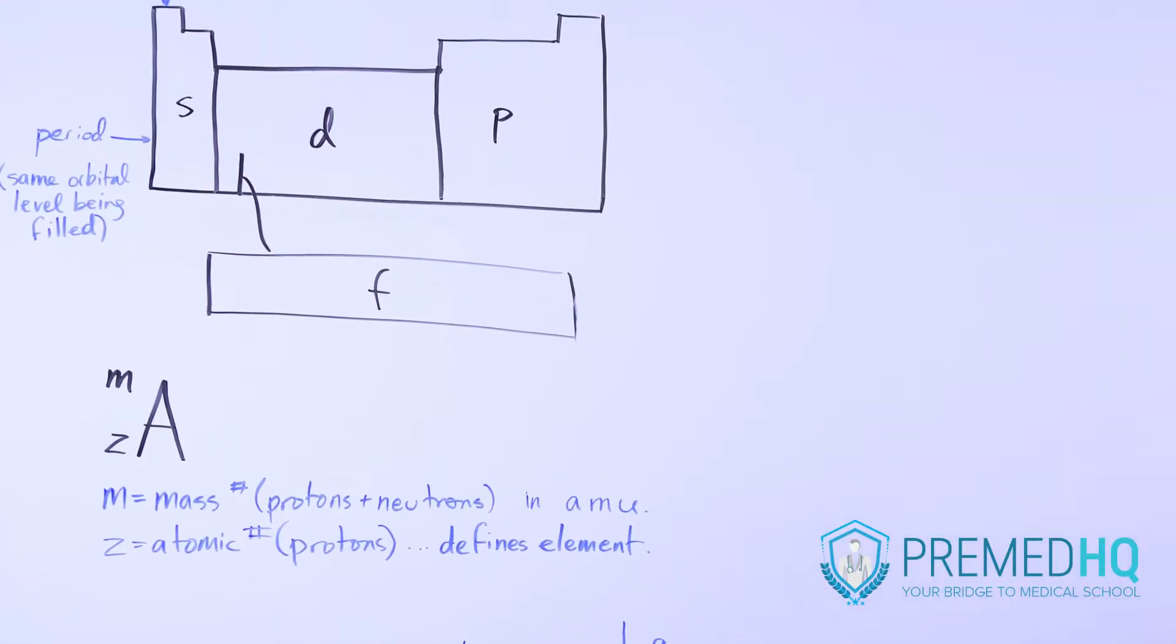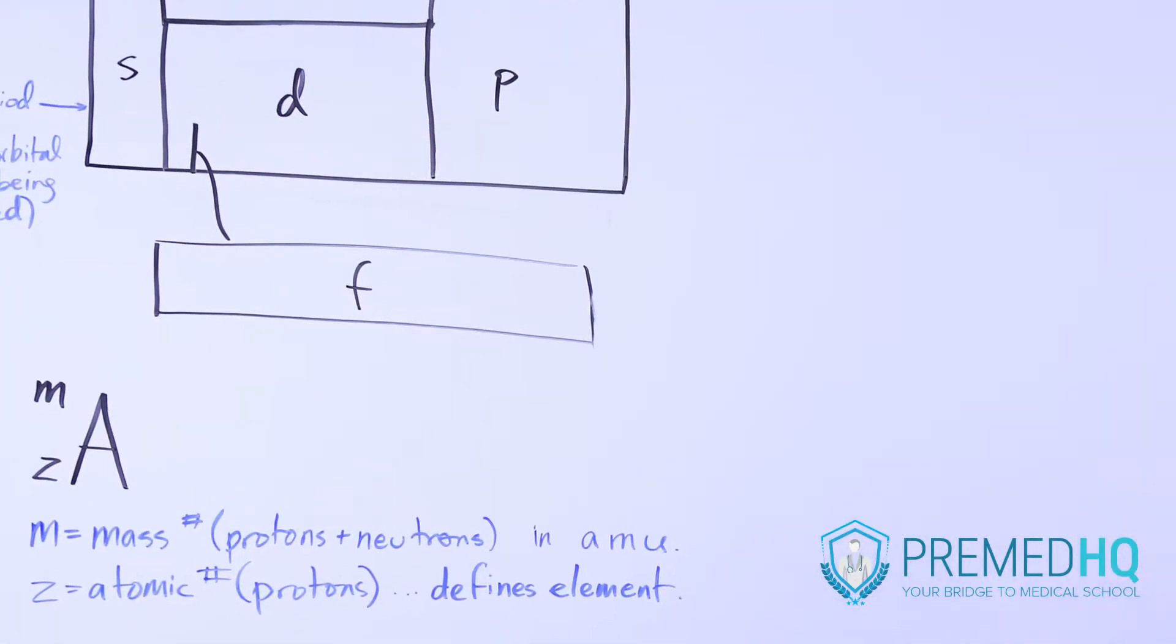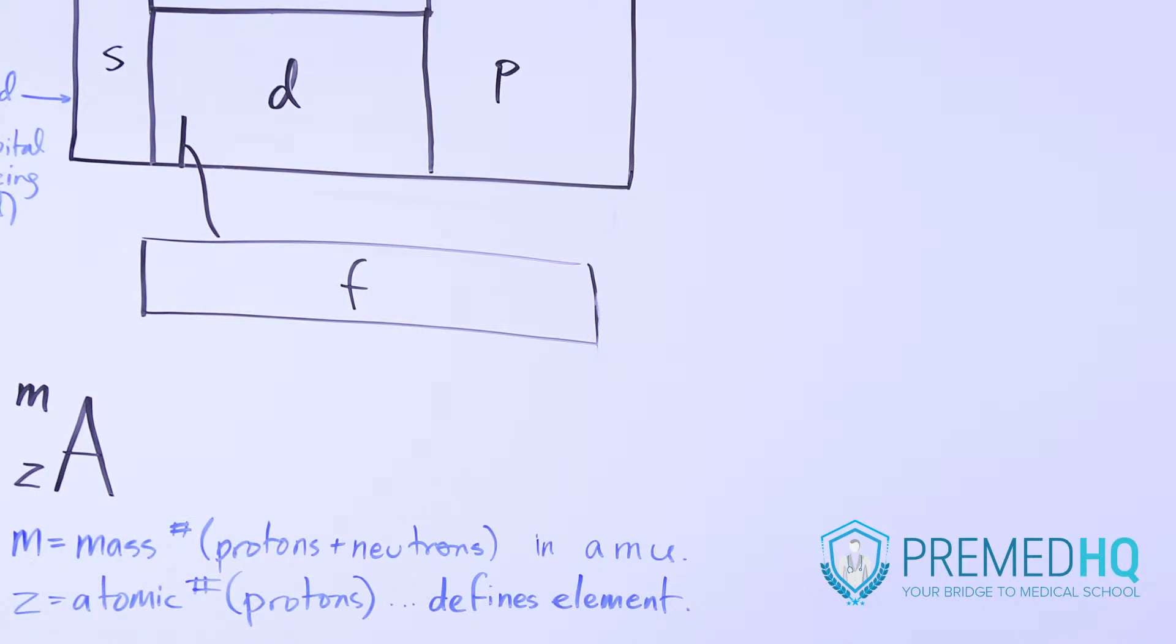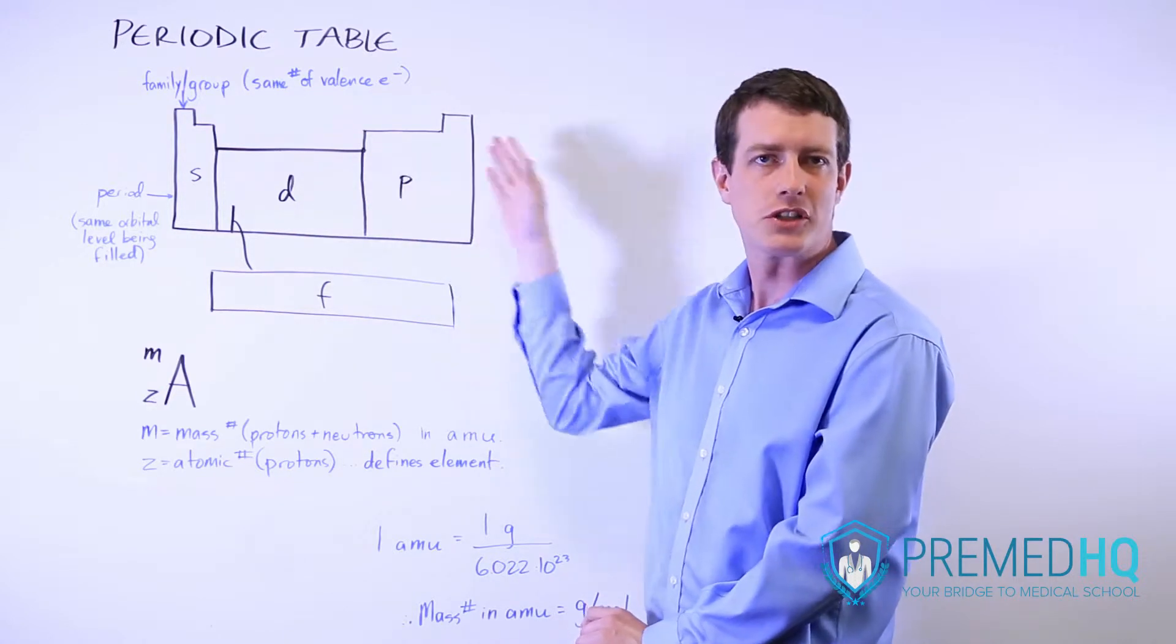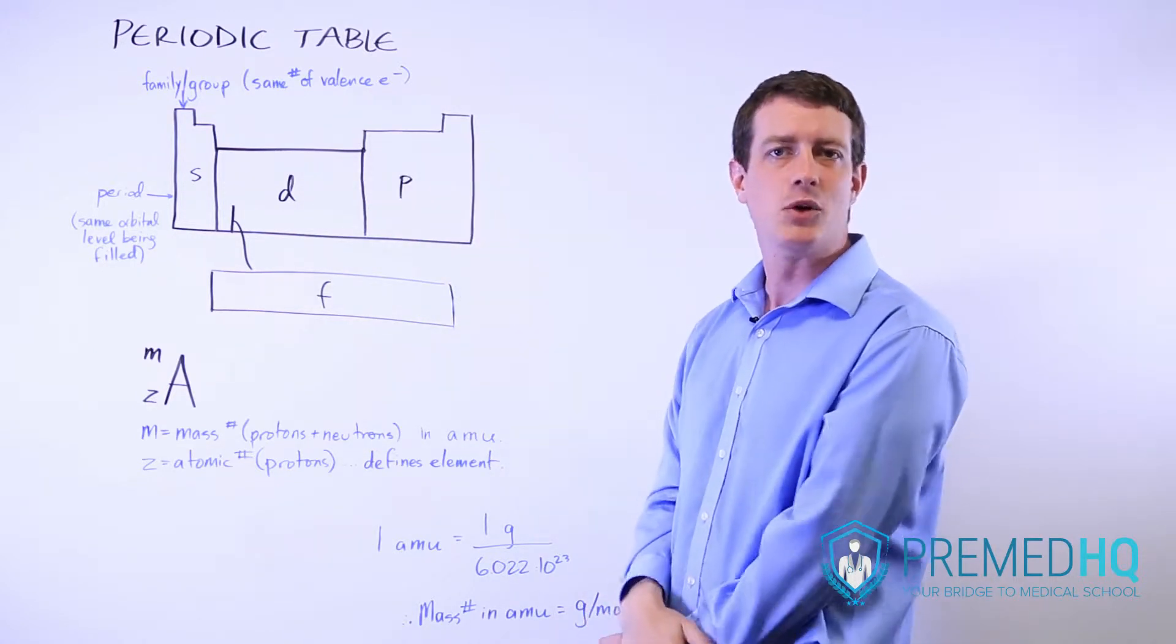Down here we have the f orbitals which are only relevant for the larger atoms that might be tested in unusual ways but are less likely to show up on one of your questions as the s, d, and p orbitals.